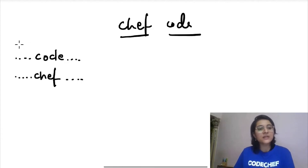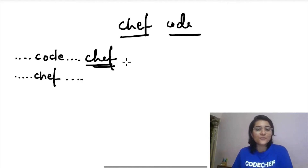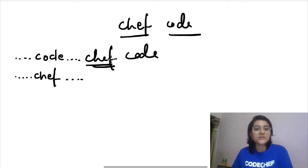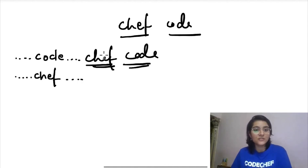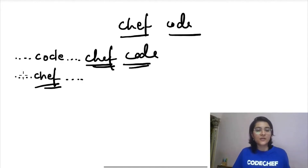There are two possible things that can happen while traversing the string. The first is that the first meaningful word you encounter is 'code' — before encountering any 'chef'. This means every single word 'chef' that appears after this 'code' is going to have a 'code' before it. No matter how many times 'chef' or 'code' appears after this point, every 'chef' encountered after the first 'code' confirms it is Chef's favorite string.